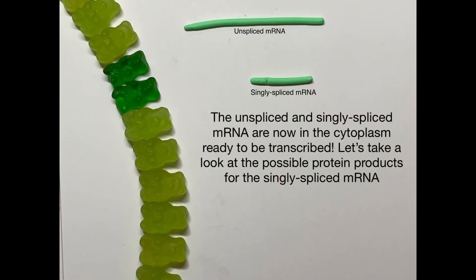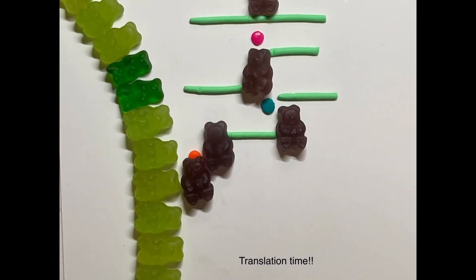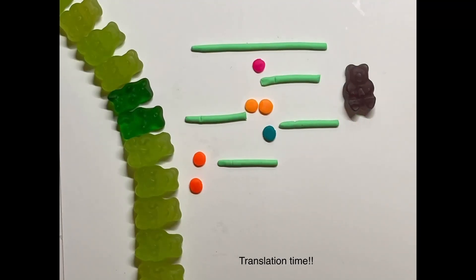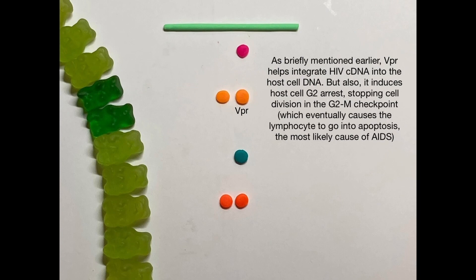Now that incompletely spliced HIV mRNAs are in the cytosol, they can be translated. Singly spliced mRNA produces four protein products: VIF, ENV, VPU, and VPR. VIF counteracts APOBEC enzymes, which convert cytidines to uridines in DNA and hypermutate genes; VIF degrades these enzymes and prevents their incorporation into progeny virions. VPR helps integrate HIV cDNA into the host cell, but also induces host cell G2 arrest, halting cell division at the G2/M checkpoint and eventually causing the lymphocyte to undergo apoptosis, which is the most likely cause of AIDS.